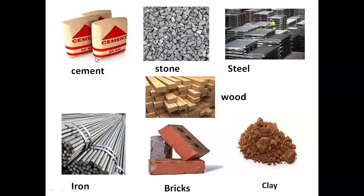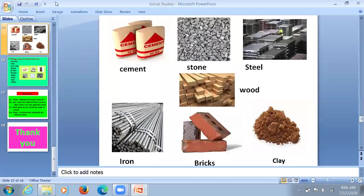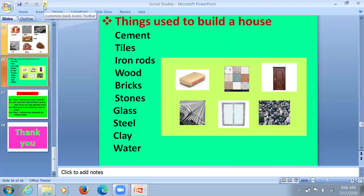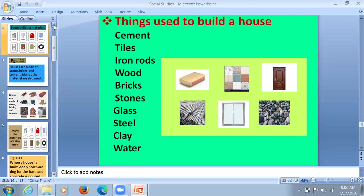Let me repeat. Cement, stone, steel, wood, iron, bricks and clay. Things used to build a house: cement, tiles, iron rods, wood, bricks, stone, glass, steel, clay and water. These are the things used in making of buildings.